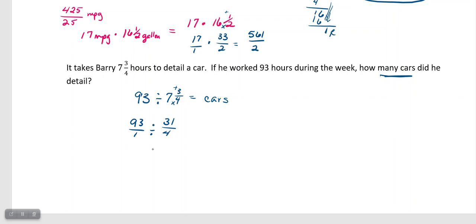And, I'm going to do my KFC, my keep, flip, and change. So, I'm going to keep the 93 over 1, change my division to multiplication, and flip my 31 over 4, making it 4 over 31.